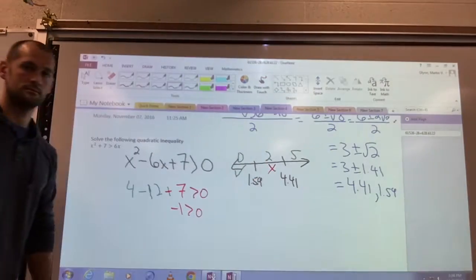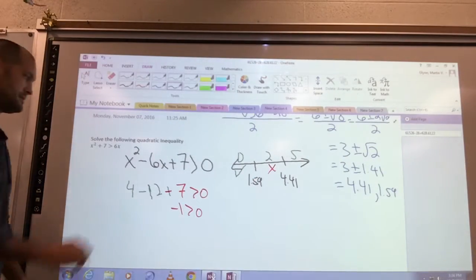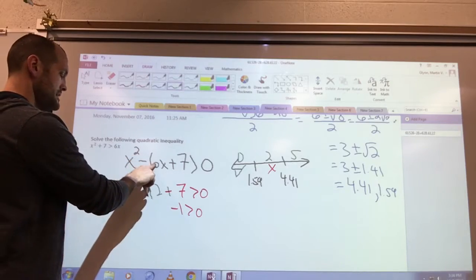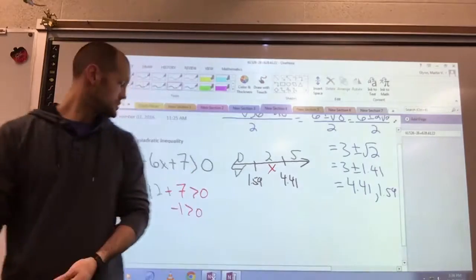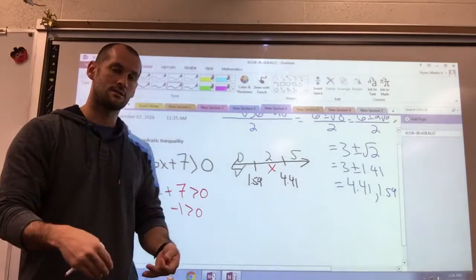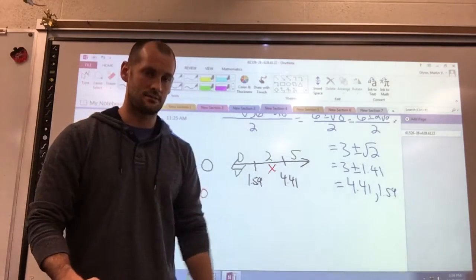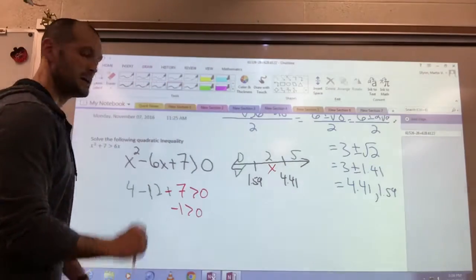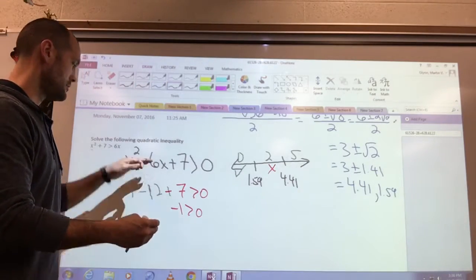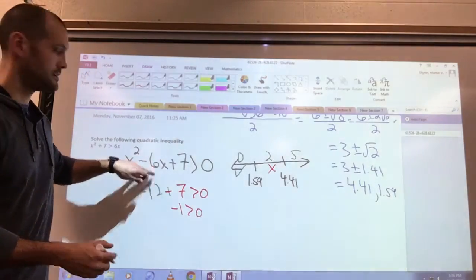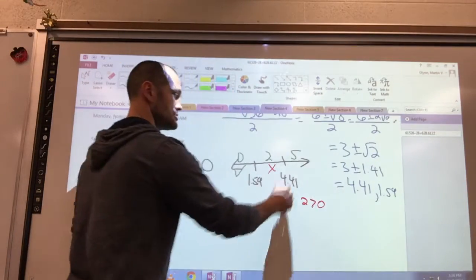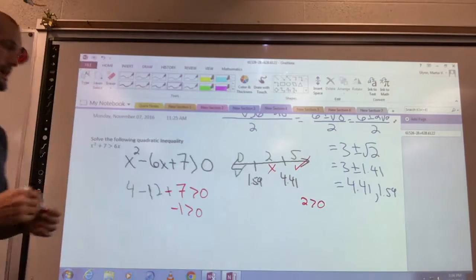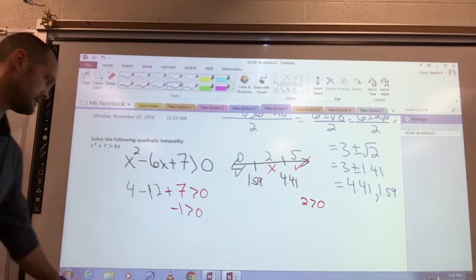Lastly, plugging a five in, we get 25 minus 30 plus seven. Think about it. We'll do that in our head. 25 minus 30 plus seven. Okay, we get 32 minus 30, leaving us with two greater than zero on this side, which is true. So yes, that also gets the check.